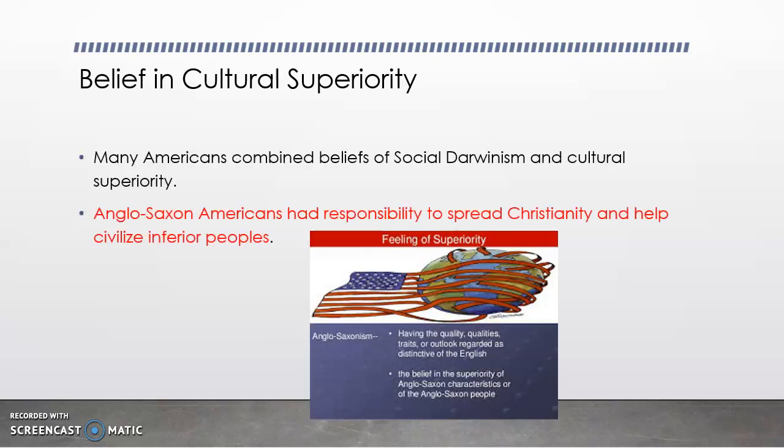Cultural superiority. Americans combine beliefs of social Darwinism and cultural superiority, meaning that the strong survive, and we believe that the American way is the strongest way. So Anglo-Saxon Americans — meaning Americans of British or English descent — have the responsibility to spread Christianity and help civilize inferior peoples and bring them into the more advanced world.